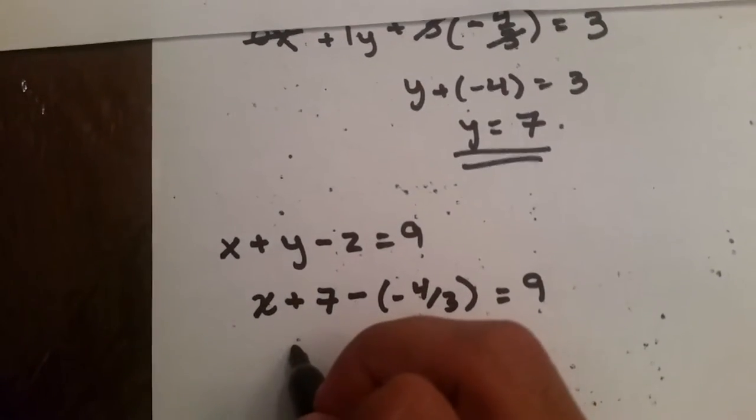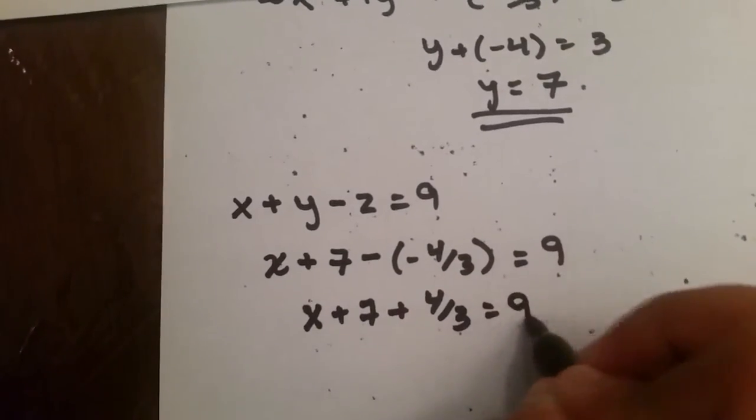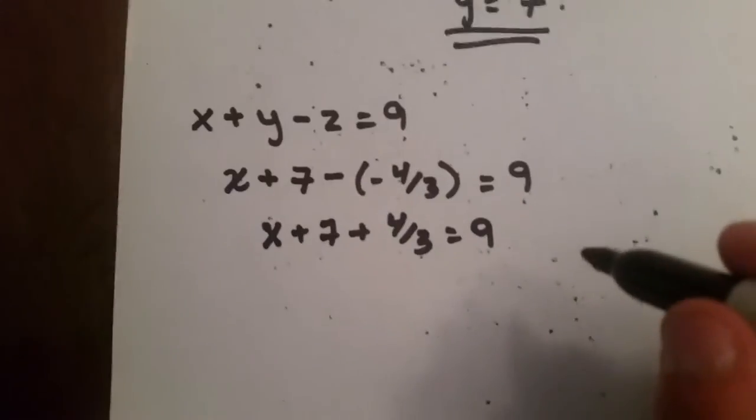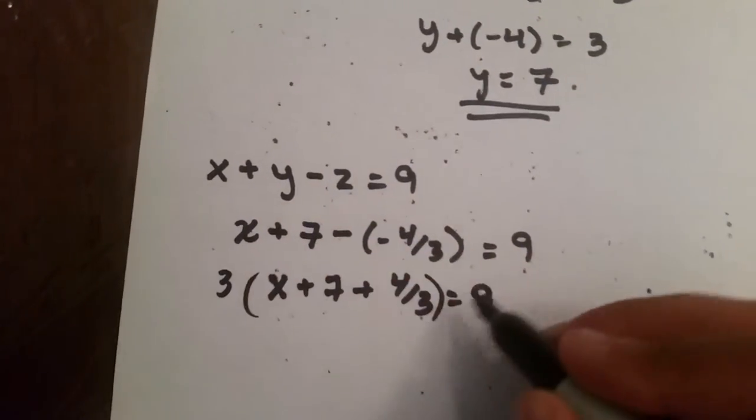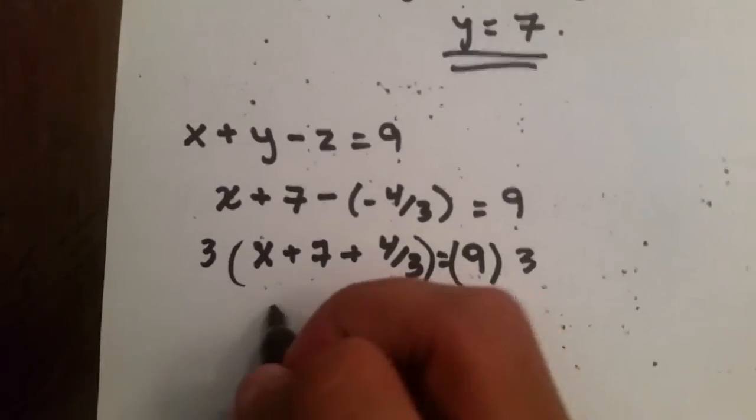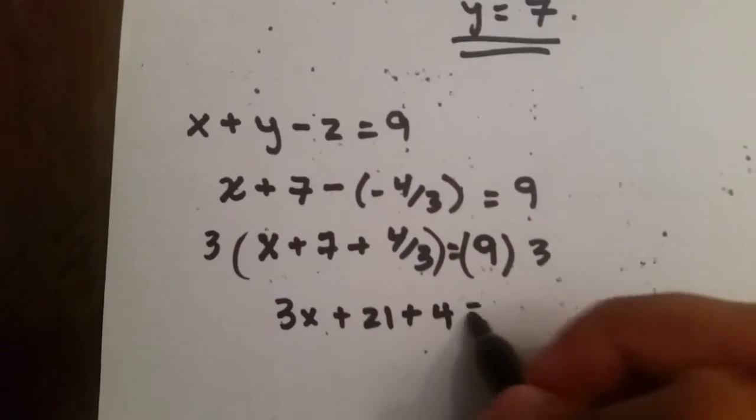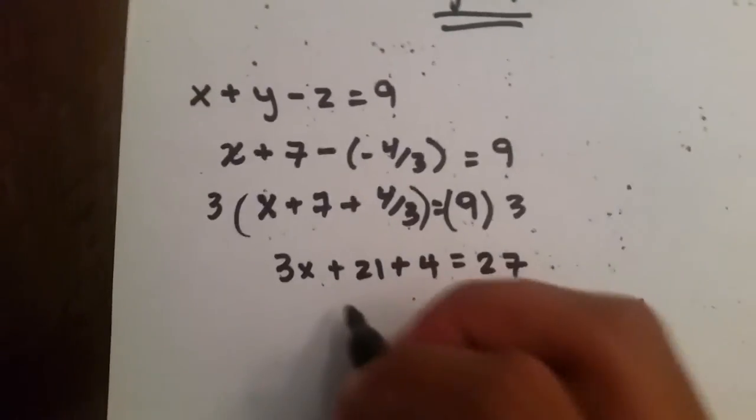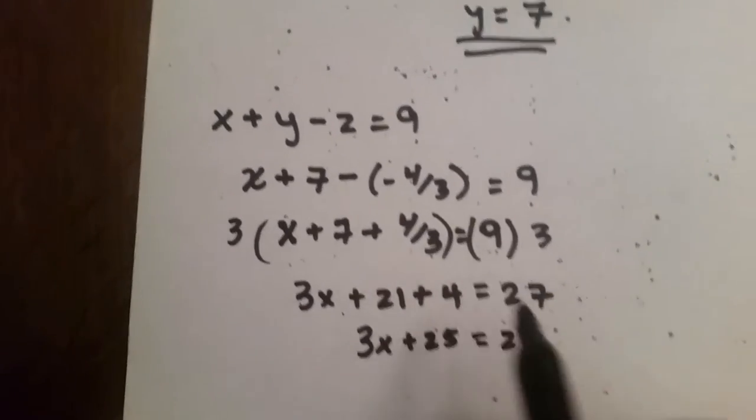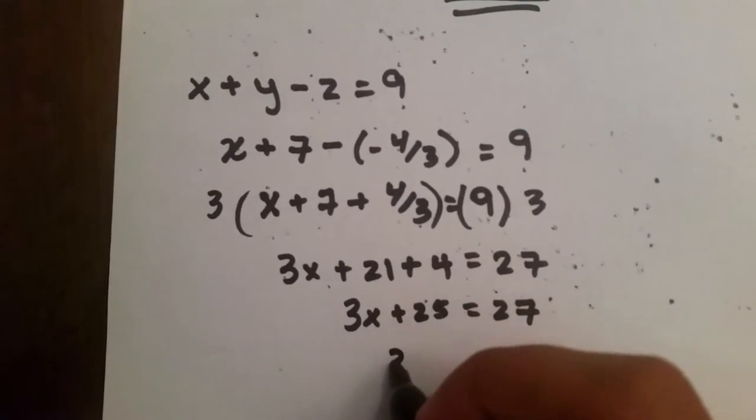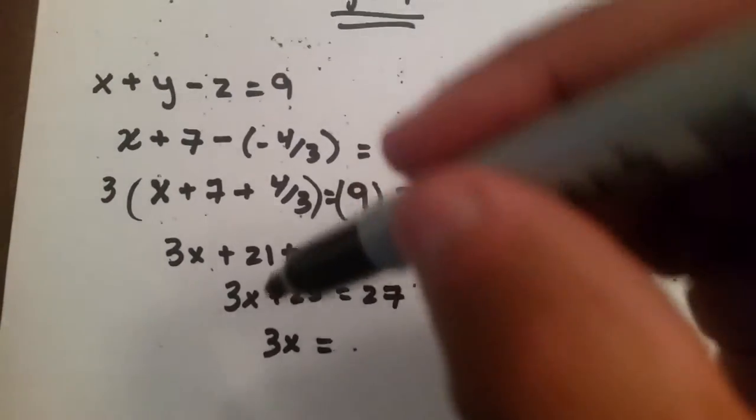So, now we do x plus 7 plus 4 over 3 equal to 9. And instead of me doing a common denominator and fractions, I'm just going to multiply both sides by 3 to get rid of the fraction. So, we have 3x plus 21 plus 4 equal to 27.